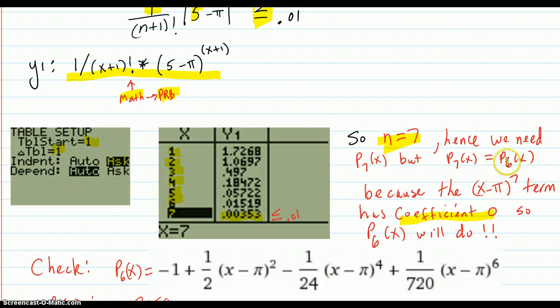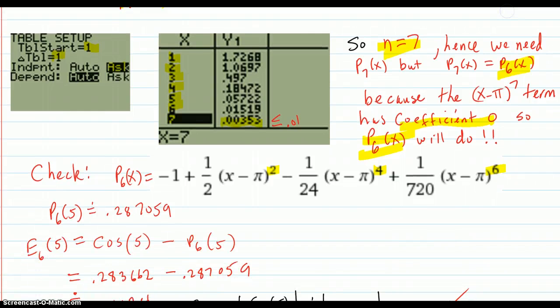So P₇ has a zero coefficient. So we might as well just use the sixth degree. So Taylor polynomial of the sixth degree will do in this case. That's just because for the cosine at pi the powers are skipping the odd ones.